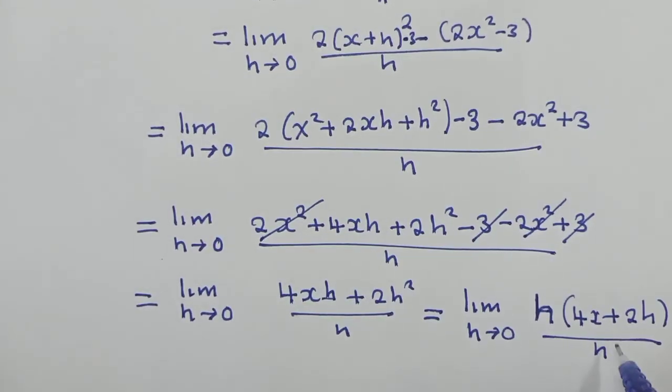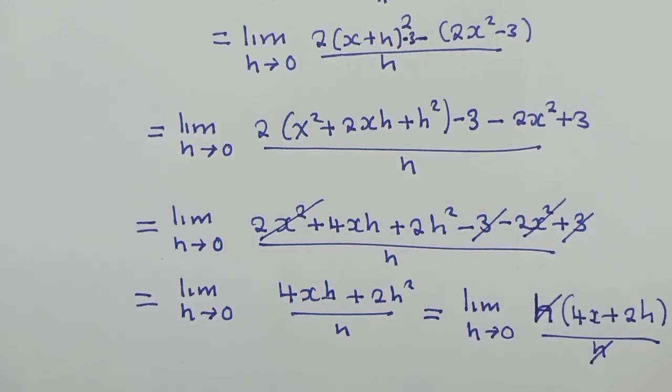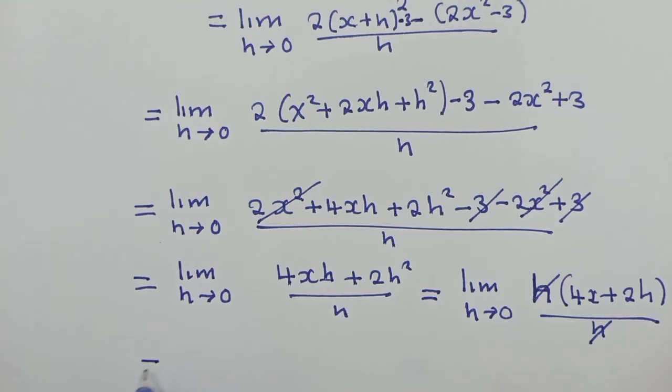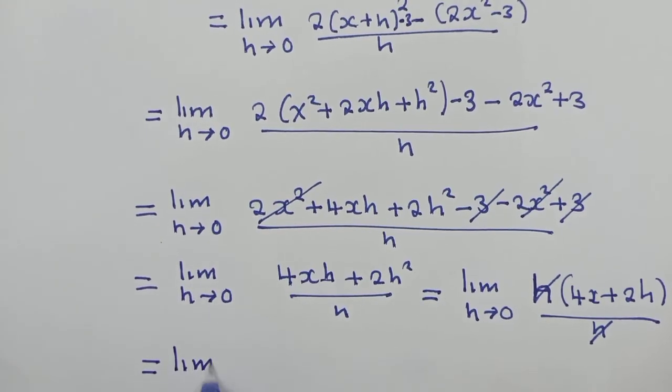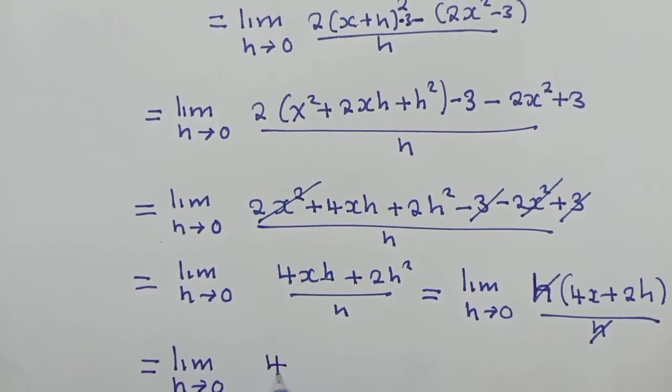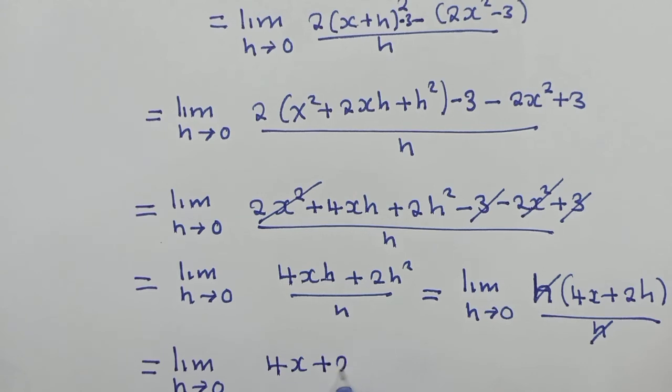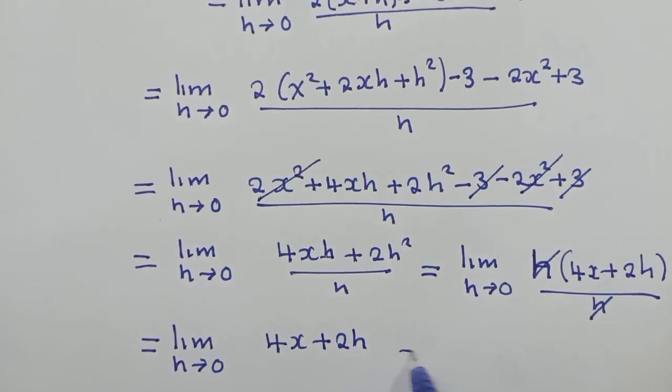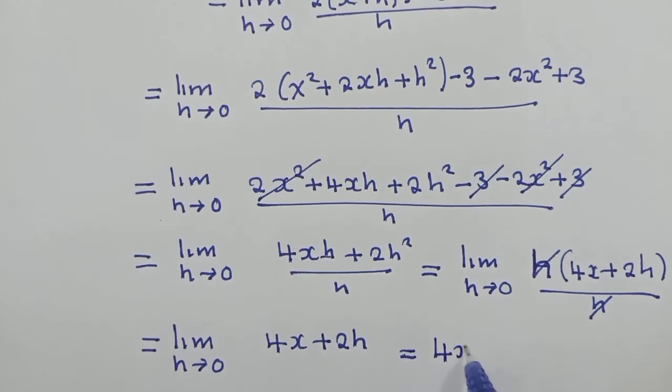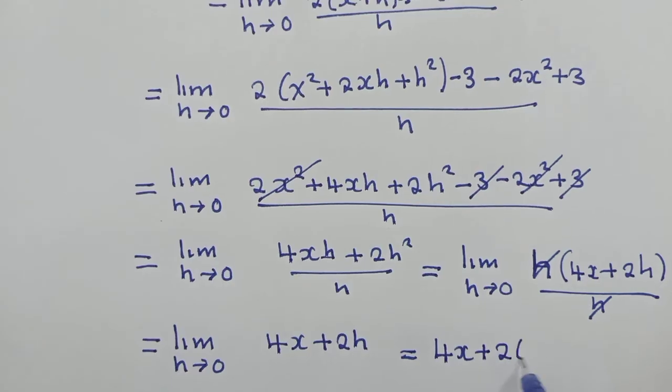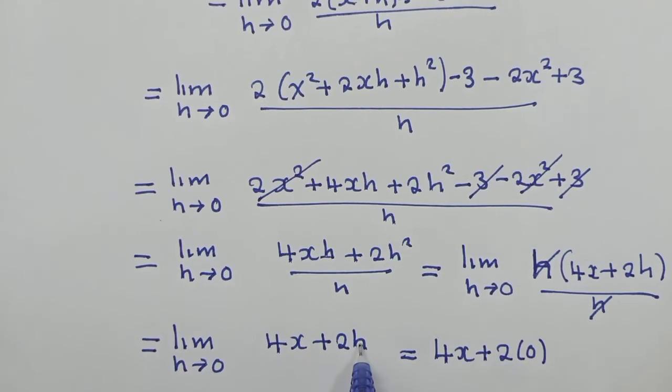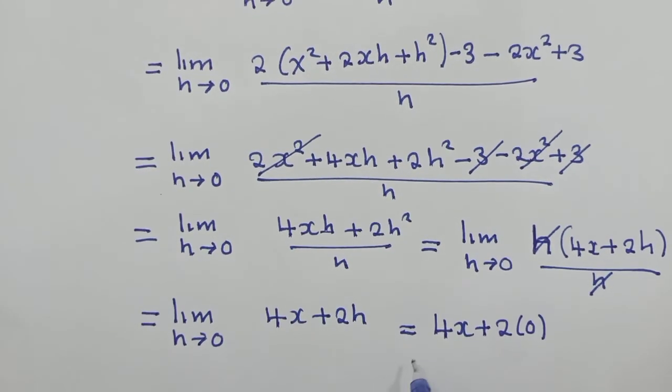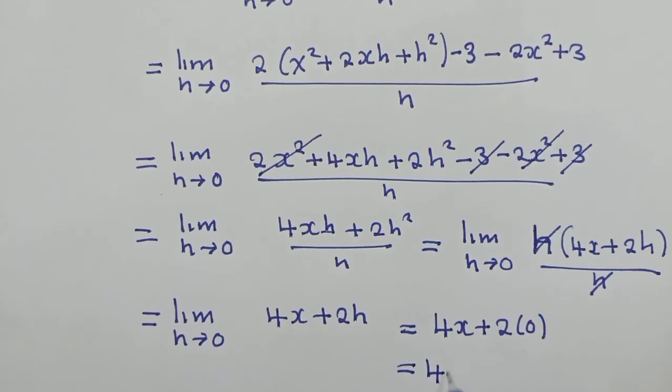So if you can see nicely, the h here and h will cancel. We're now good to go. We can say limit as h approaches 0. We have 4x plus 2h right here. Okay, which is equal to 4x plus 2 and a 0. We substitute a 0 where h is. And our final answer will be equal to 4x. This is our final answer.